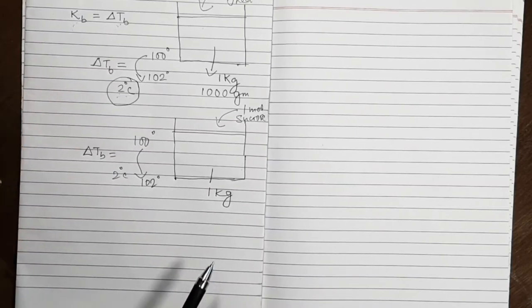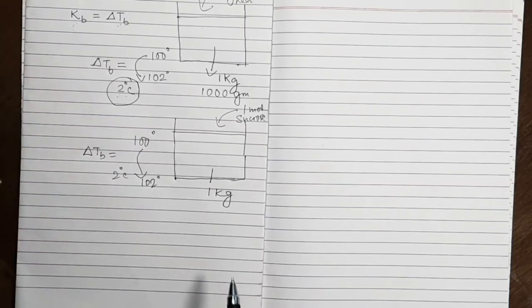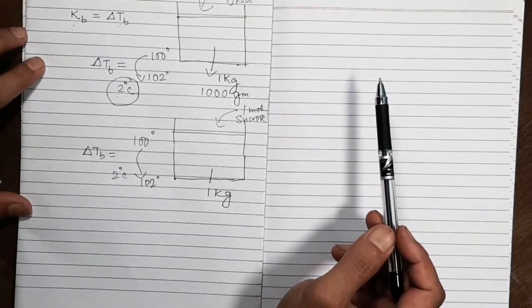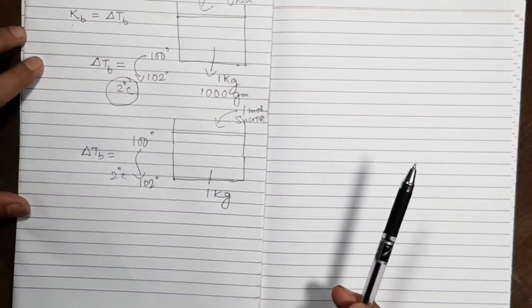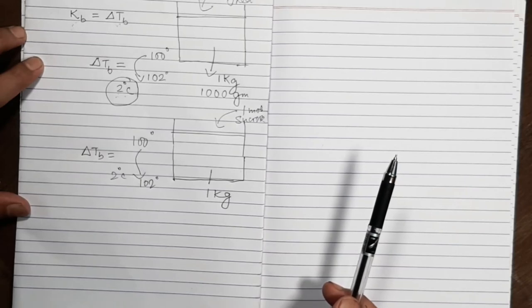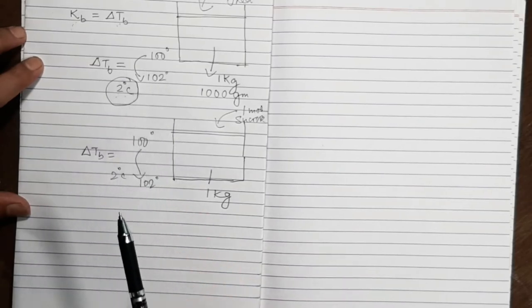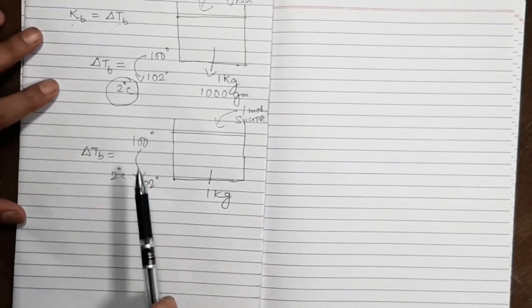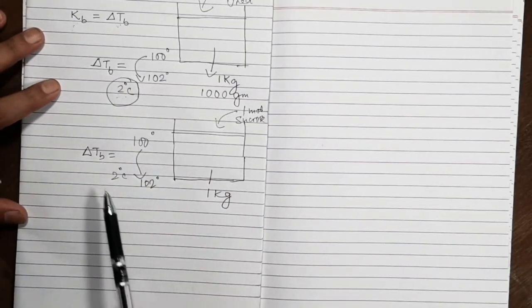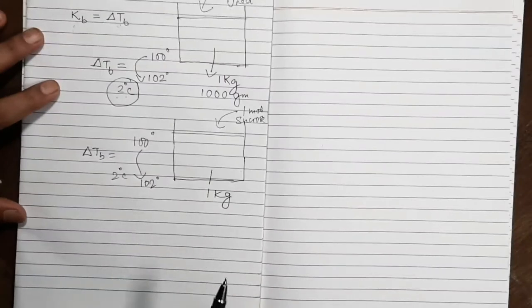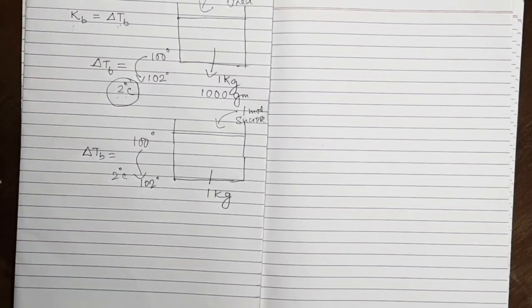That fixed rise in boiling point — which is constant as long as the molality of the solution in water remains one — is known as the ebuloscopic constant of water. Whether you add urea, sucrose, glucose, galactose, or any other non-volatile, non-electrolyte solute and prepare a solution of molality one, the boiling point of water will always rise by the same fixed value, say 2°C. Ebuloscopic constants are therefore constants of liquids.